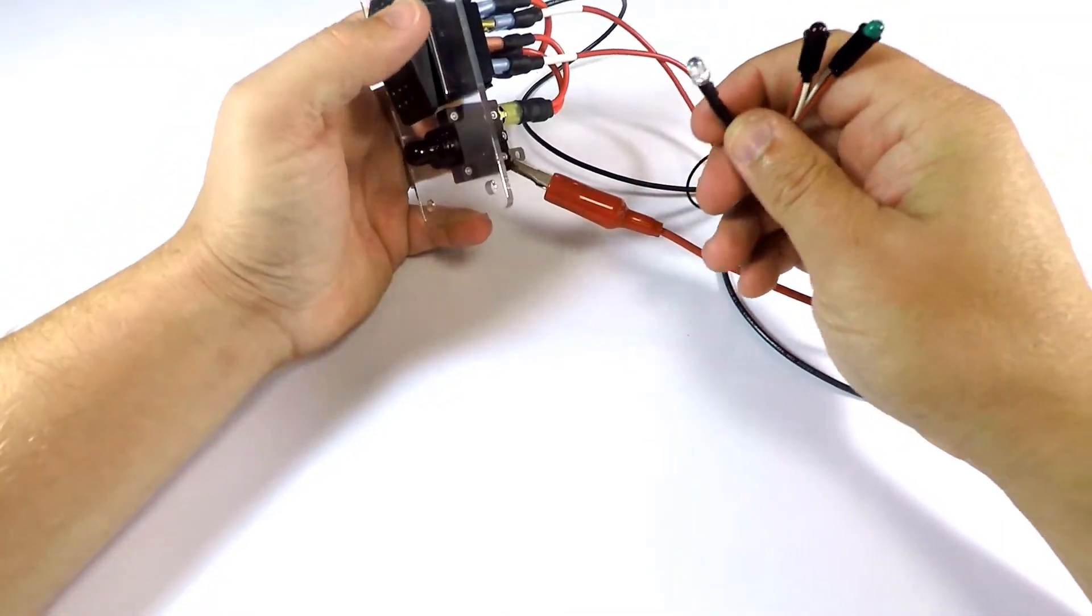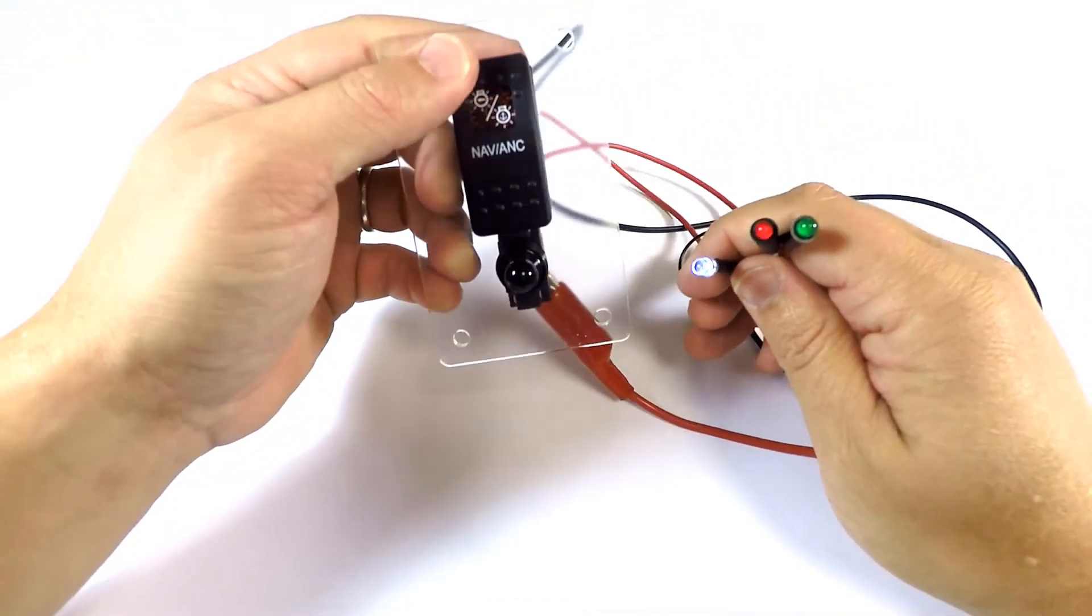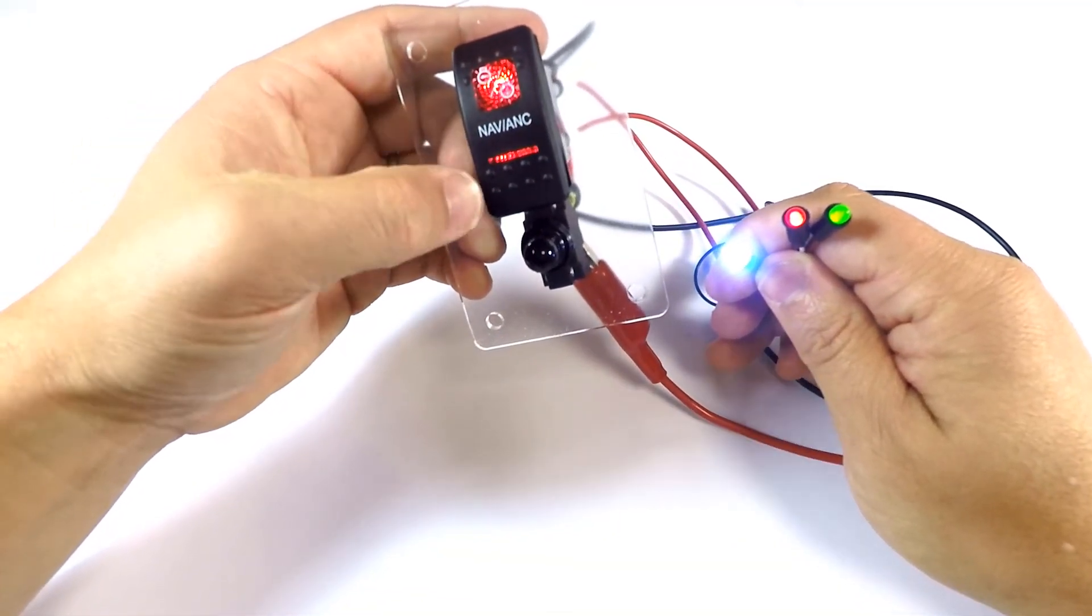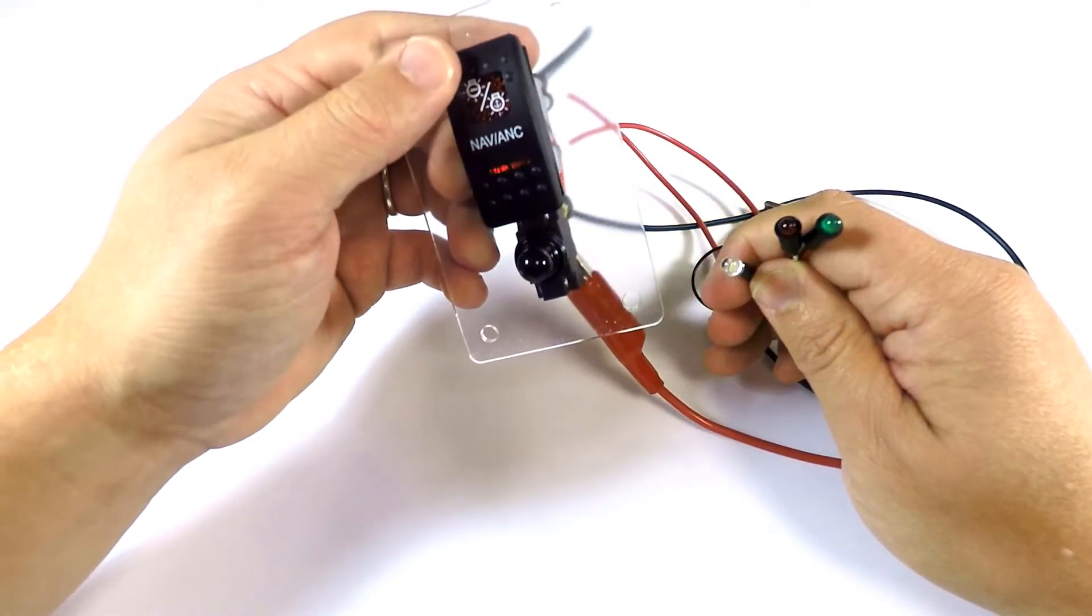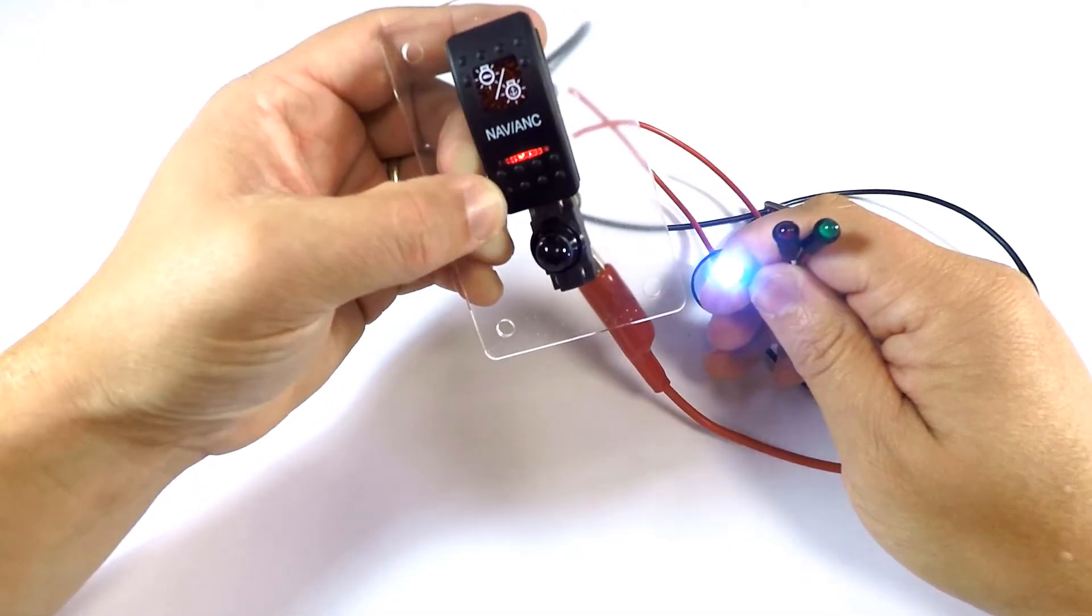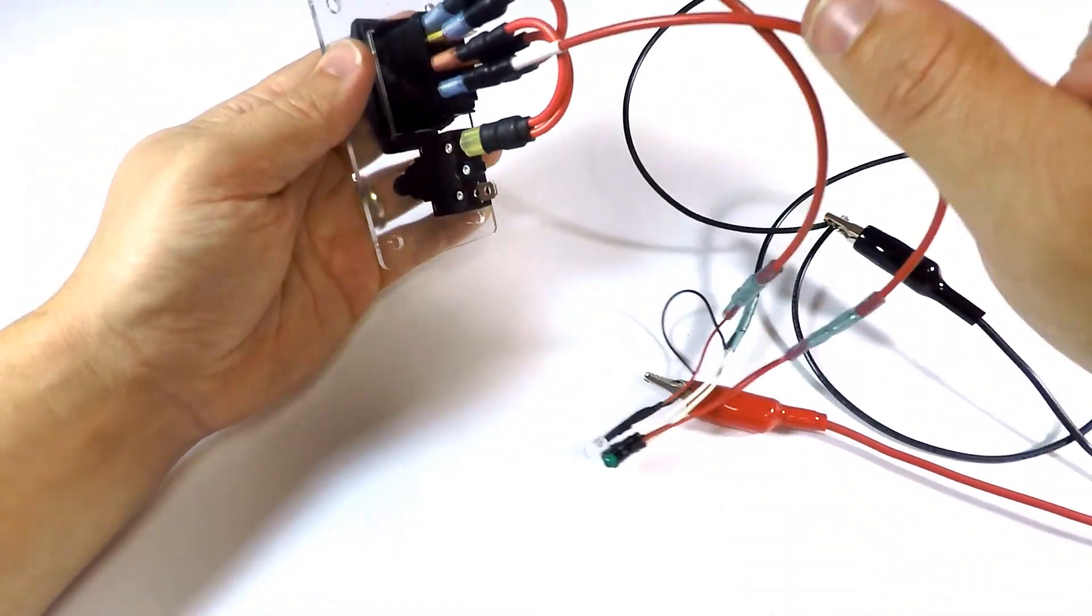We've got our three test lights here, and we'll demonstrate that up on the switch is all three lights, and down on the switch is going to be the white light only for anchor mode. This is when you're not running at night but you're anchored. All of them—down—anchor.